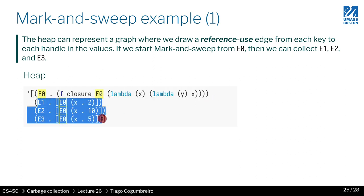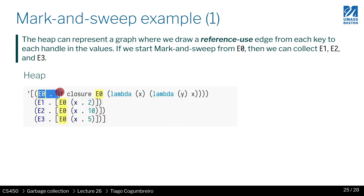So now E1, E2, and E3 are not reachable via E0. So I can safely reclaim them. So in the mark stage, what I get is a set with only containing E0.